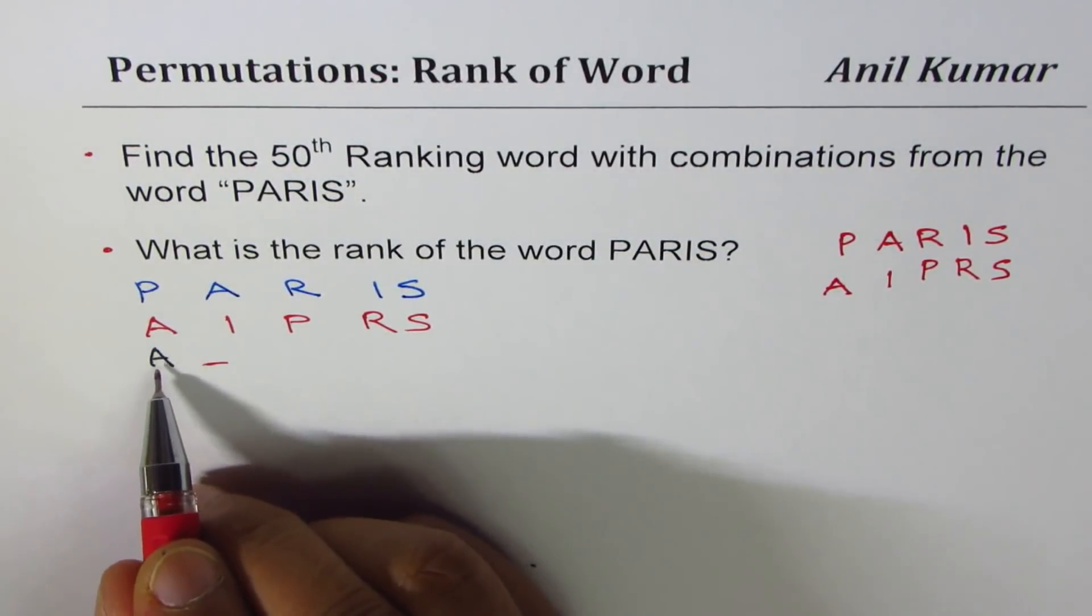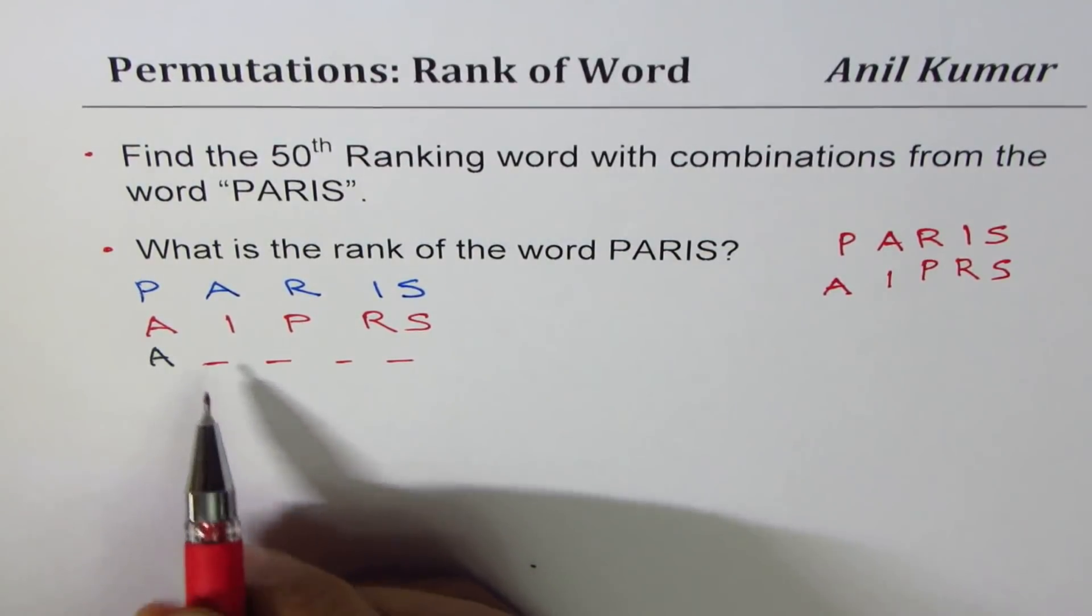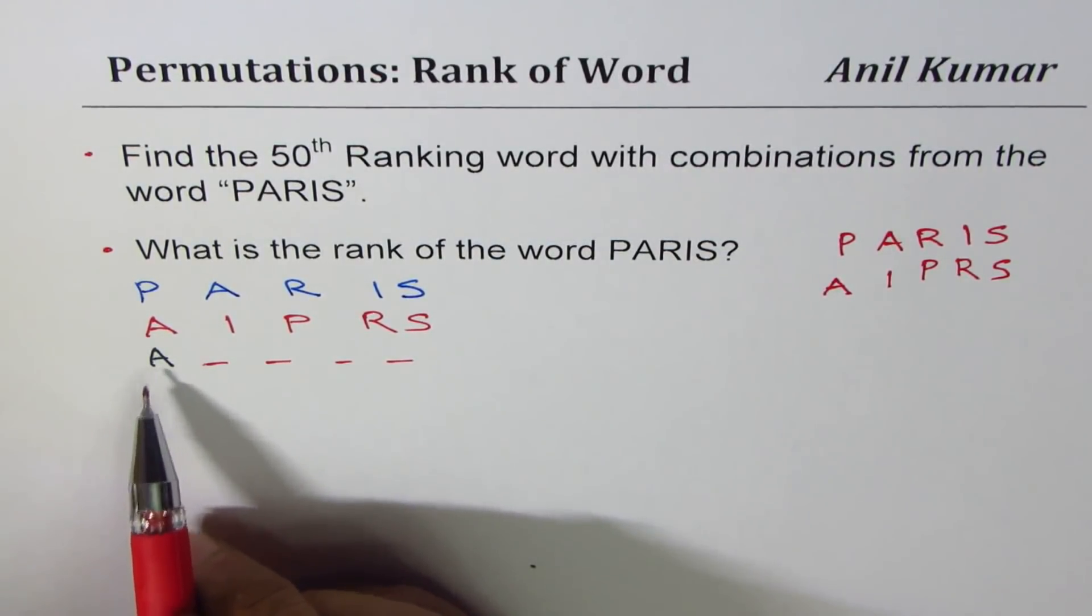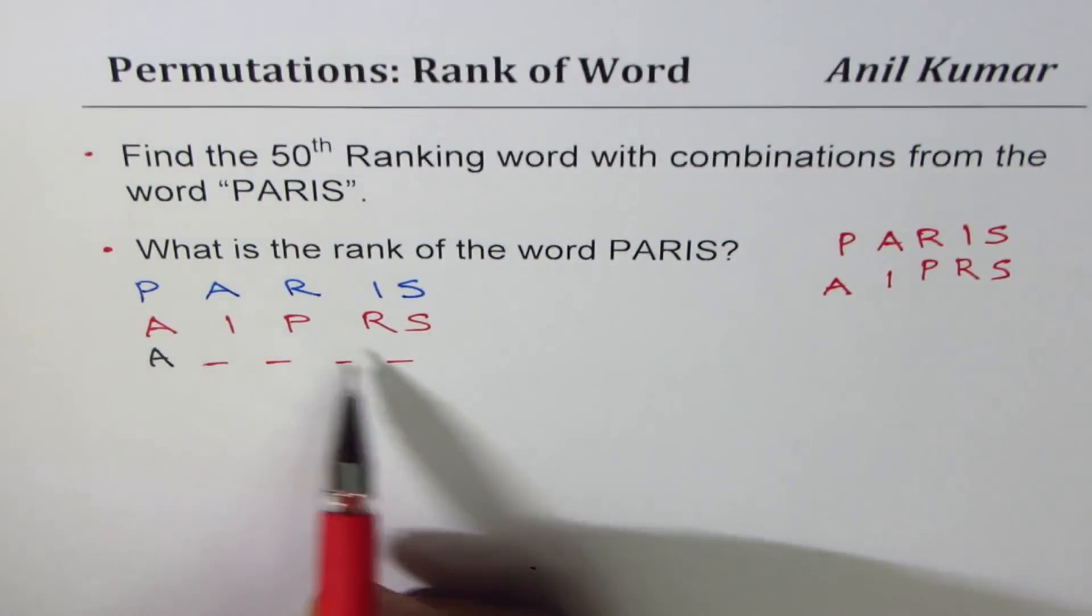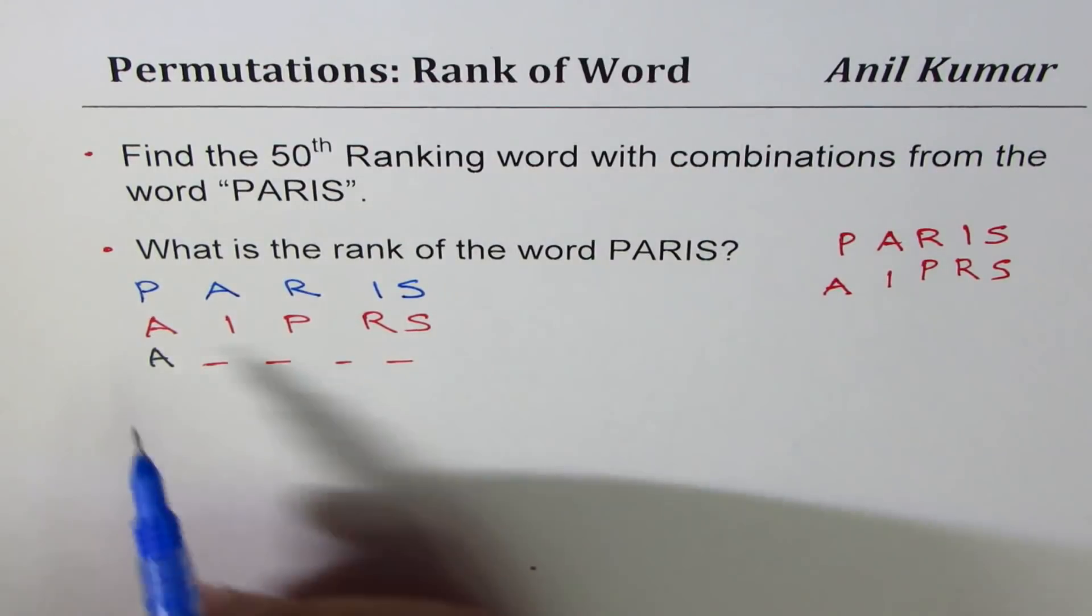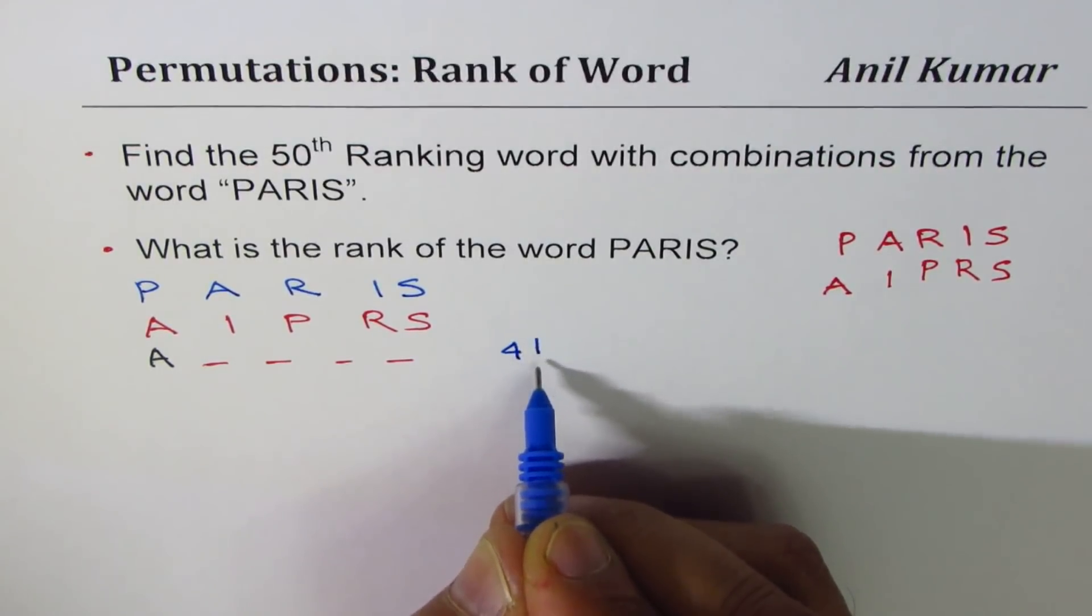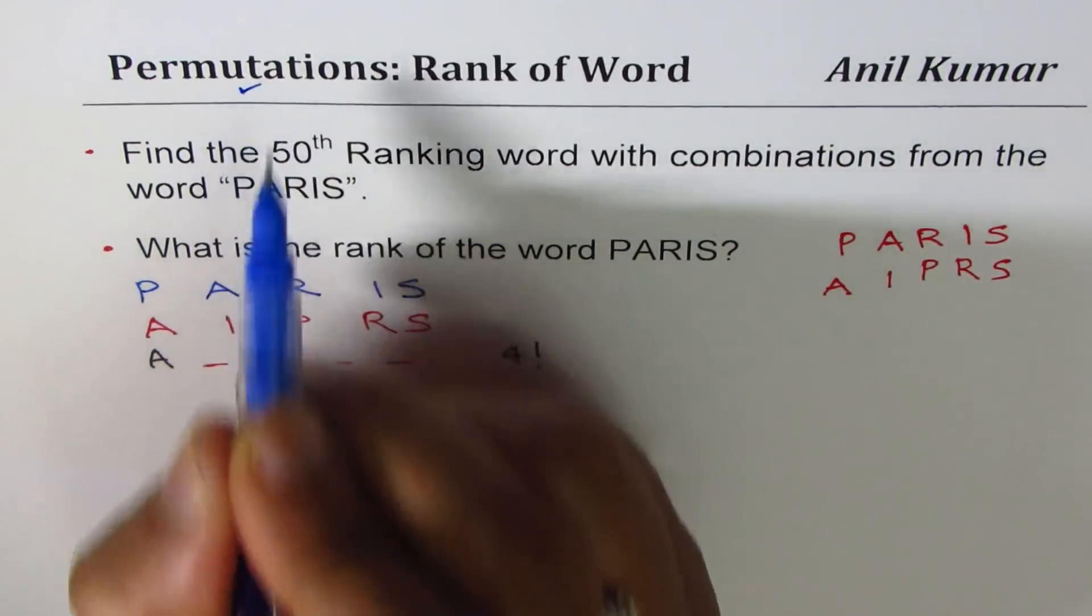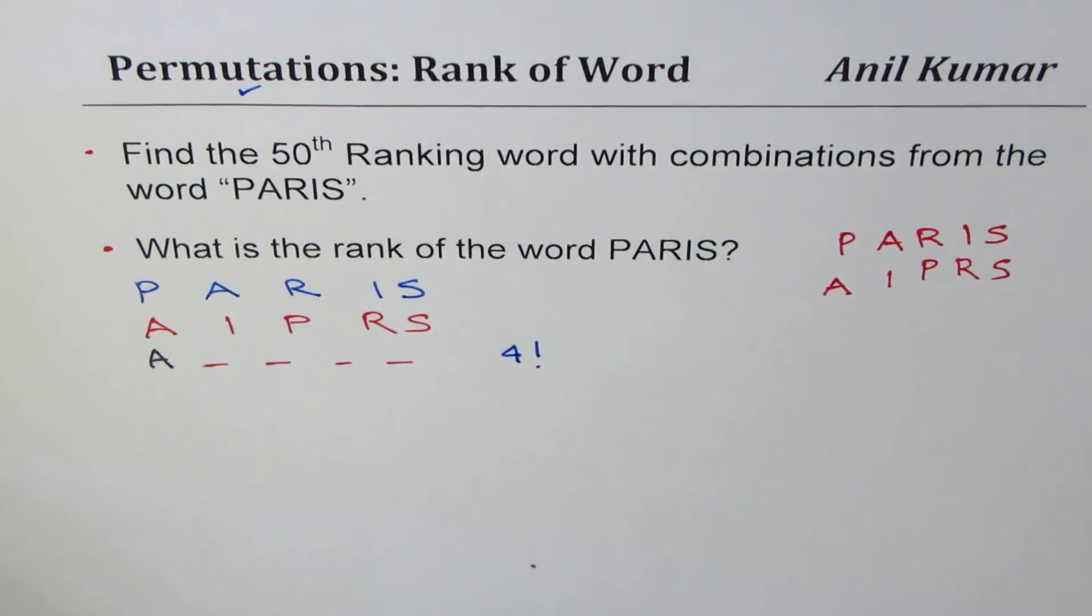So we have four positions to fill. One, two, three, four positions to fill. All words beginning with A and having these letters, five letters, will come before Paris. And how many of these words? One, two, three, four. That gives us four factorial from what we have learned in permutations. No repetitions involved, so we are not dividing by anything.